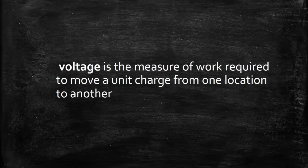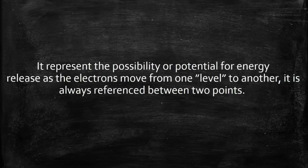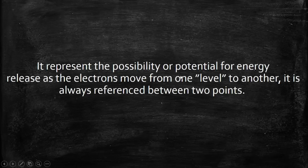Your answer is here: from one location to another, so you need two locations or two points. And that is why it is always called the potential difference between the two points. It represents the possibility or potential for energy release as the electrons move from one level to another. See how easy it is.